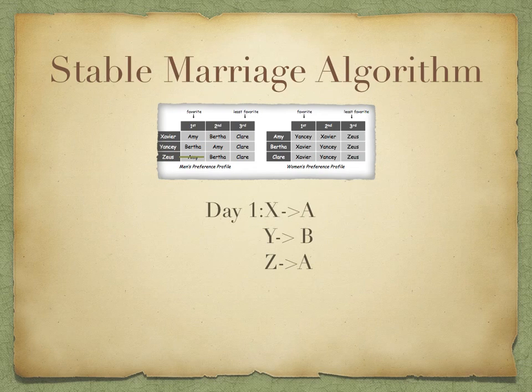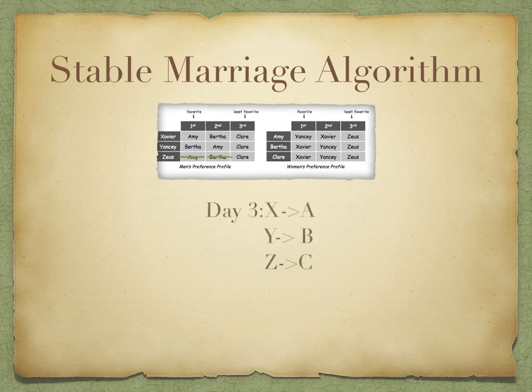Speeding this up, we can see what happens over the course of the next few days. At the end, we have a resulting stable pairing. Note that even though Zeus and Claire both prefer each other the least, the other four people have found better partners than those two, so they have to be together.